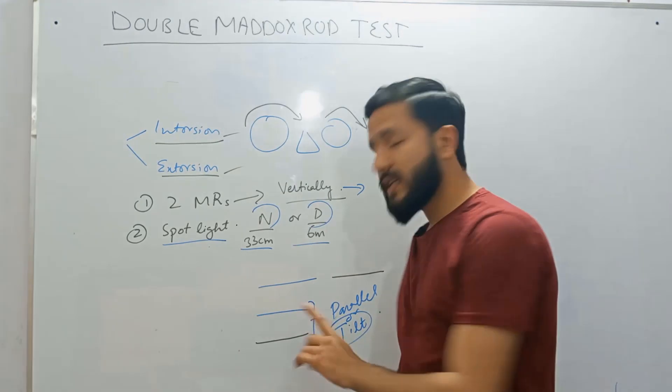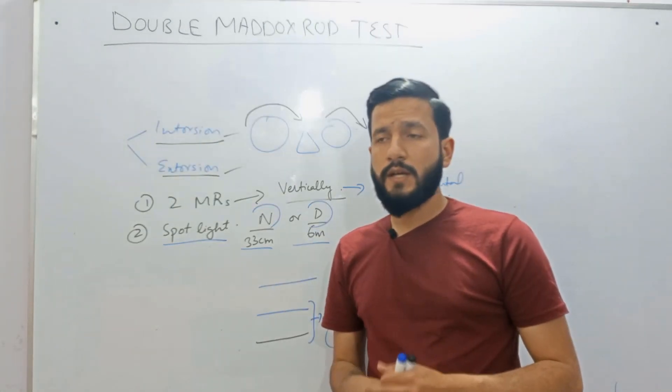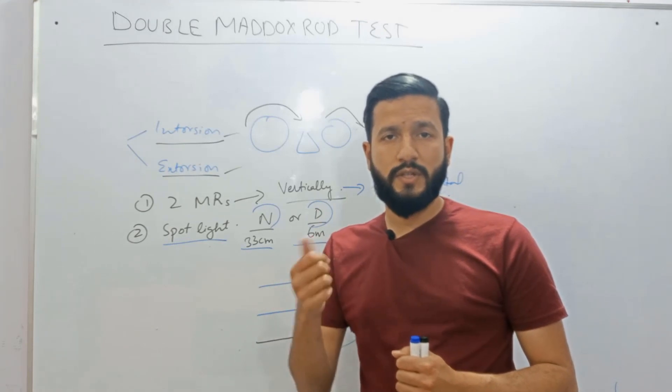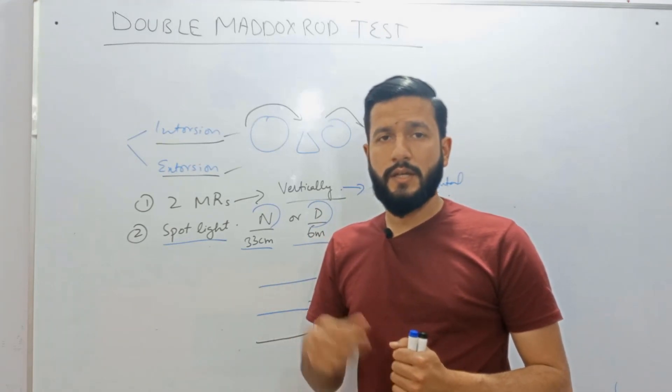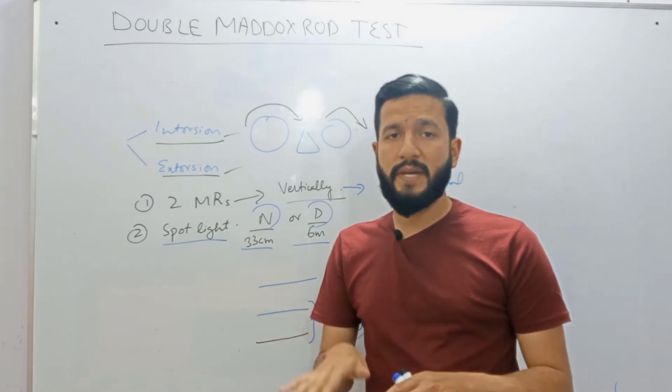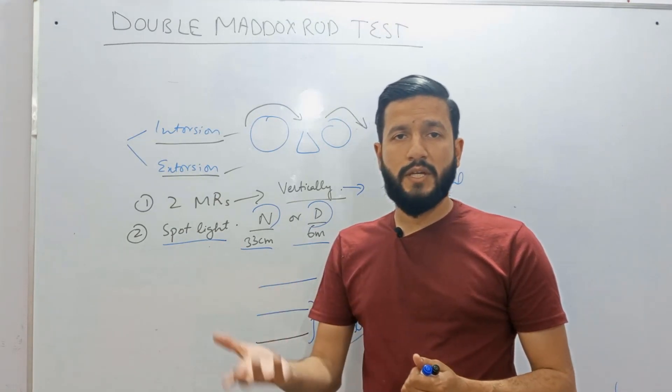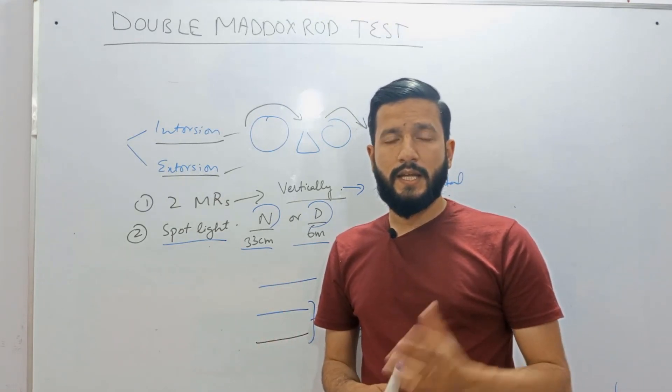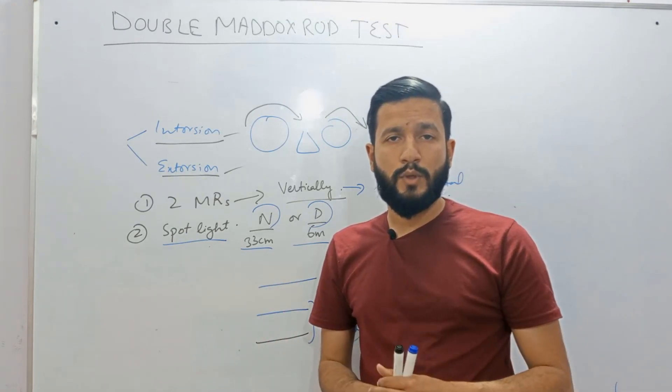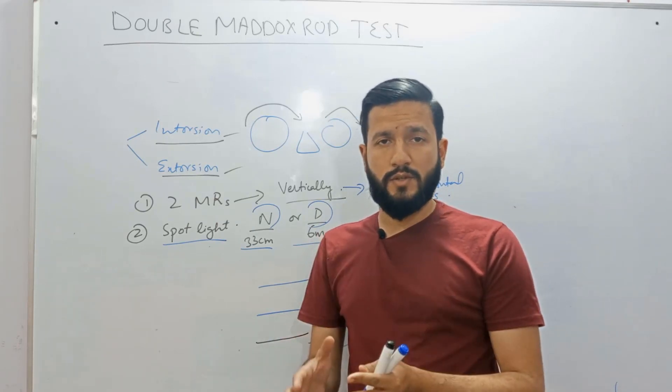If the patient reports any tilt in one of the images or both images then we will ask the patient to rotate the Maddox rod in the trial frame and do this until both lines are seen as parallel. And the degree to which he will rotate the Maddox rod we can measure it using the trial frame scale. And this degree will give you the degree of torsion present, either intorsion or extorsion.